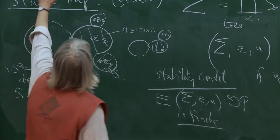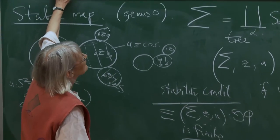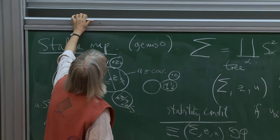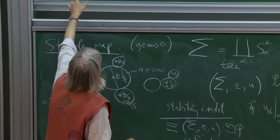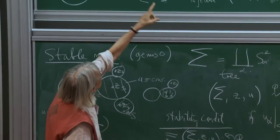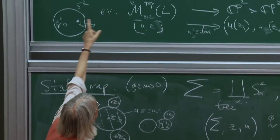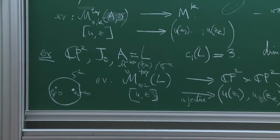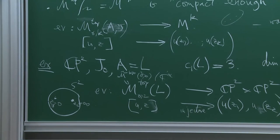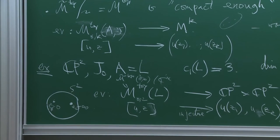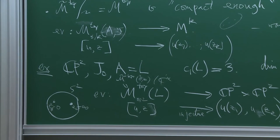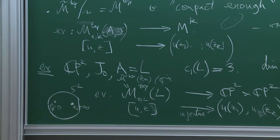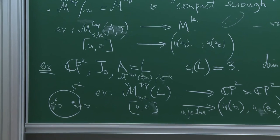So that's all I was going to say about compactness. But I erased the first condition — that everything was transversely cut out — and that's what I need to talk about, because that's the hard thing. The compactness is sort of understood.